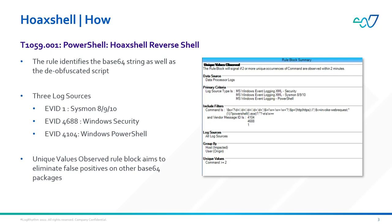If you want more information about how to enable this rule within your LogRhythm deployment, the link in the description will take you to our community page where you can download the rule and then import it into your platform. Alternatively, please reach out to your aligned sales engineer or co-pilot and they'll be happy to assist you. We have also provided links to useful blogs and other videos that outline the vulnerability in more detail should you want to continue your reading.